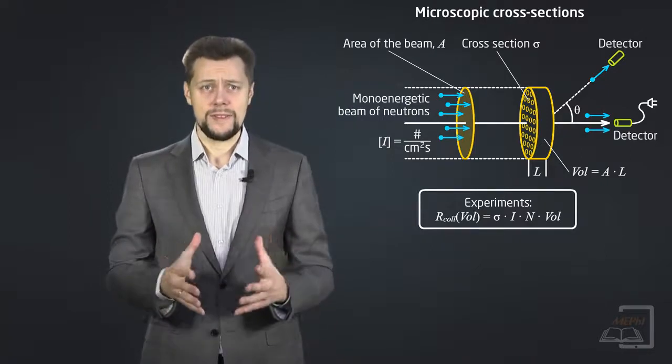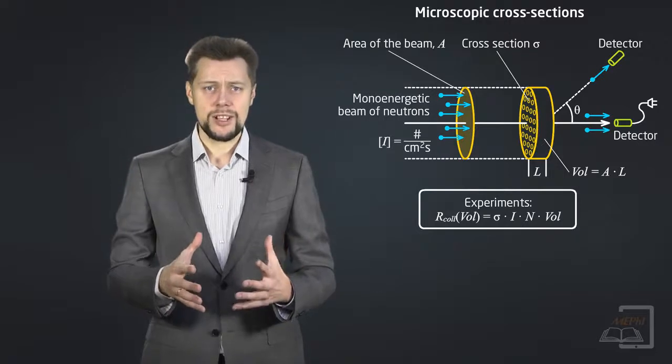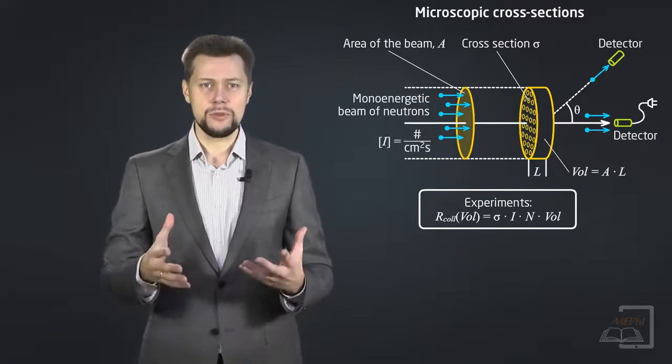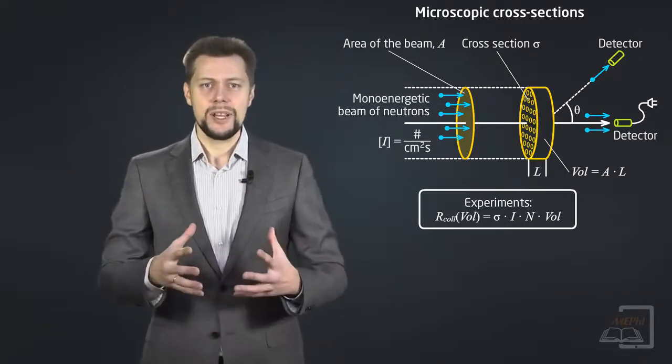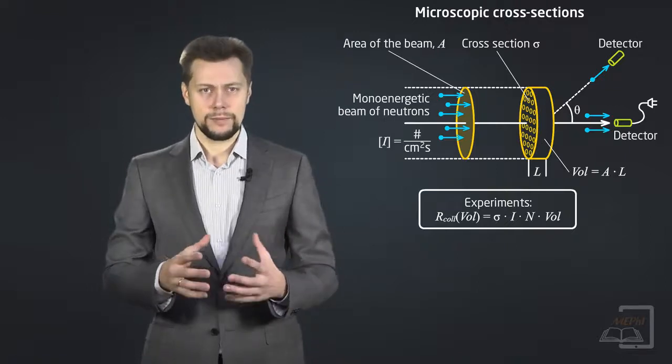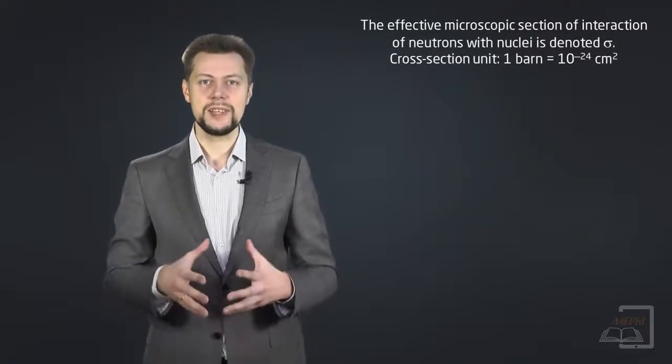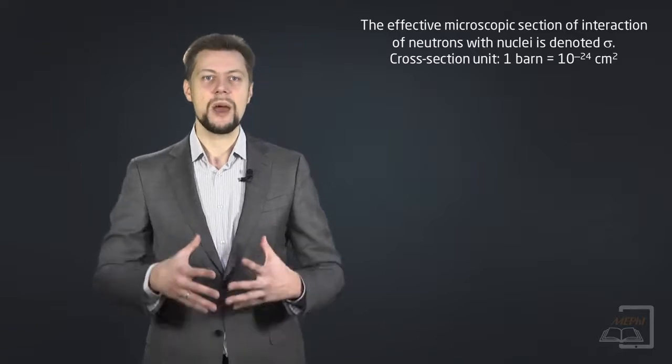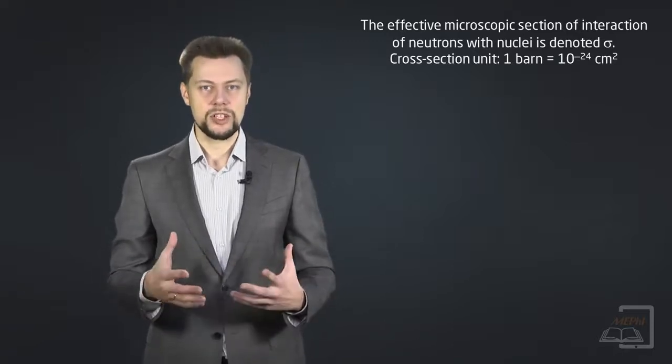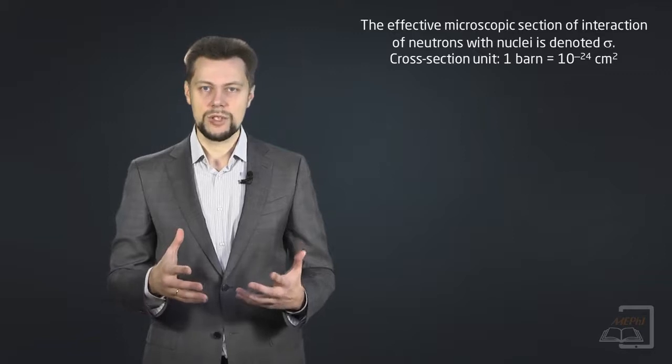It is obvious that the neutron interaction rate is proportional to intensity of neutron beam and complete number of atoms in a foil. The proportionality coefficient in this dependence is called the effective microscopic cross-section of interaction of neutrons with nuclei.